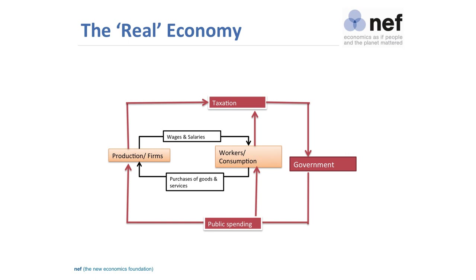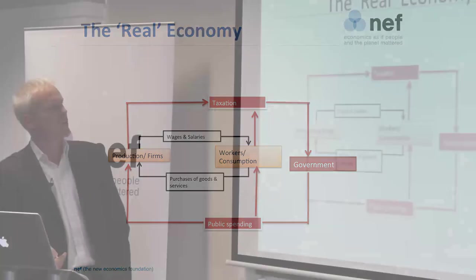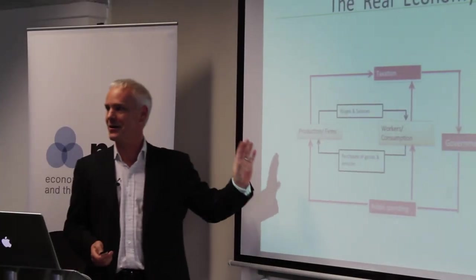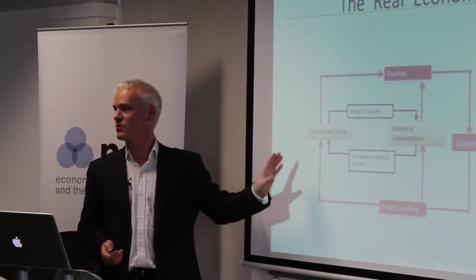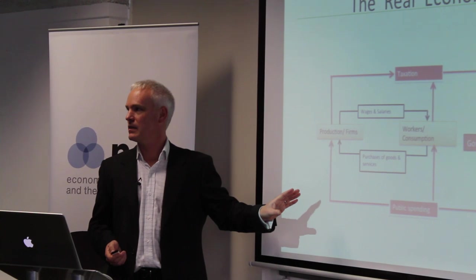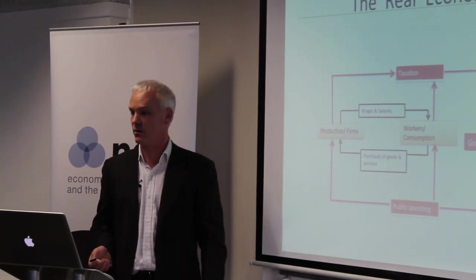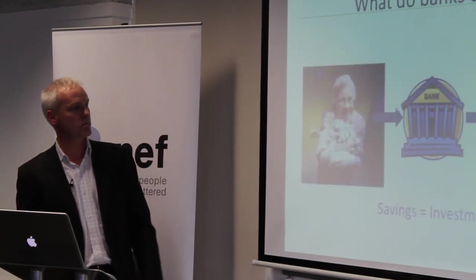Let's put the government in. The government: you pay taxes to the government and they spend, so that's another source of circulating money around the economy. That's kind of roughly where macroeconomic models stop. But where are the banks? That raises the question: what do banks do?